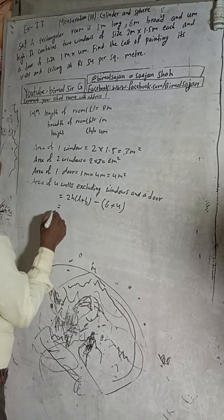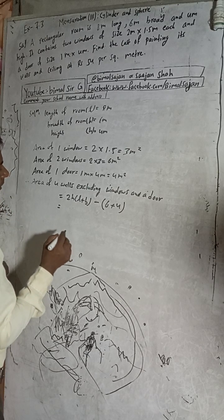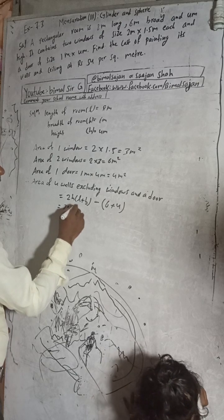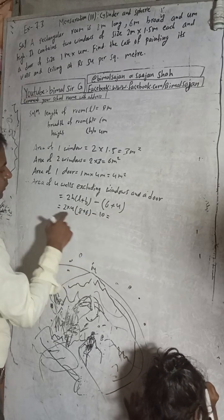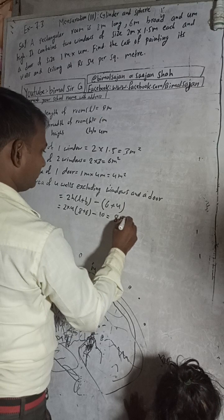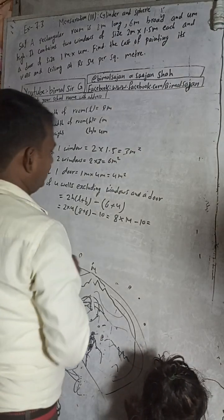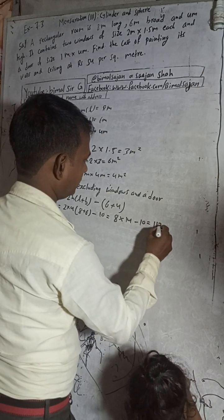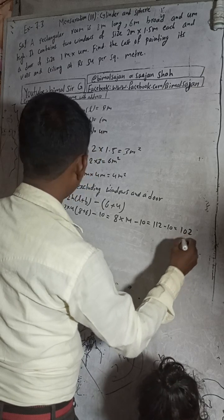So 2H, H is 4 meters, into L is 8 and B is 6, so 8 plus 6 equals 14, into 8, minus 10. So 14 into 8 is 112 minus 10.